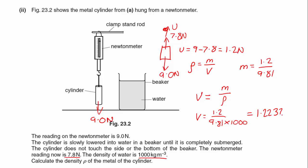Now I've got to work out the density of my cylinder. I know the weight of my cylinder, so I need to get the mass. I'll take the weight which is 9 and divide by 9.81, then divide by my volume.